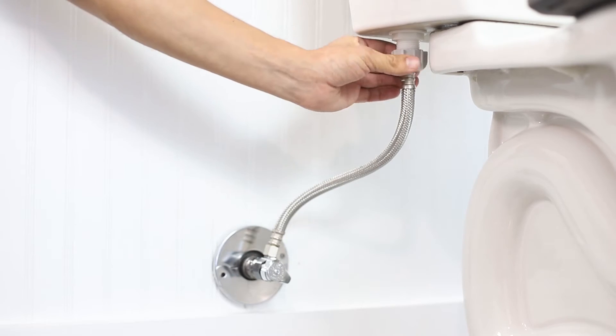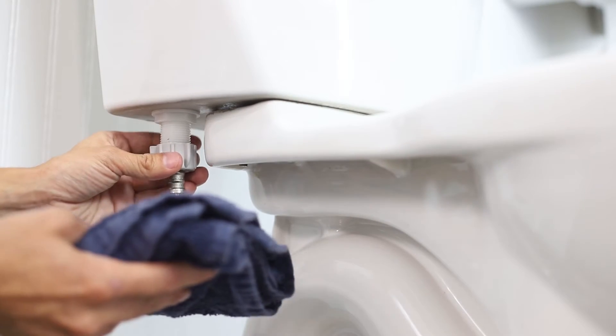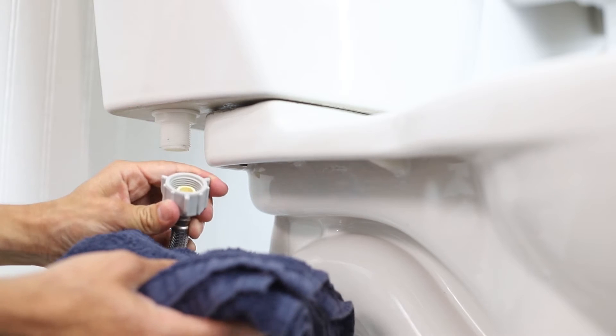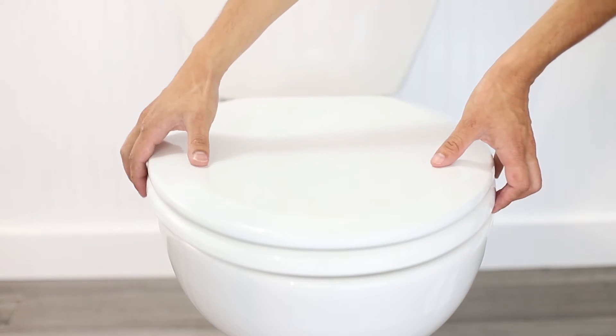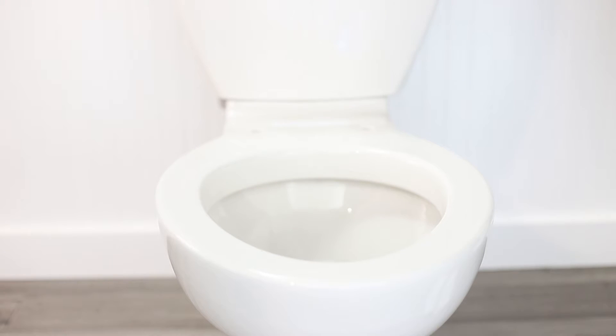Unscrew the flexible water supply line from your fill valve under the toilet tank. You may want a small bucket or towel handy to catch any residual water. Remove your existing toilet seat and thoroughly clean your toilet.